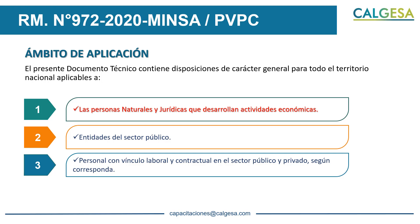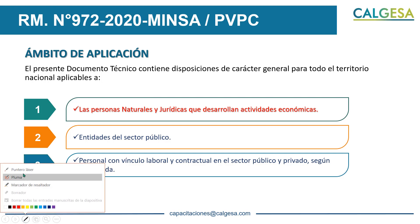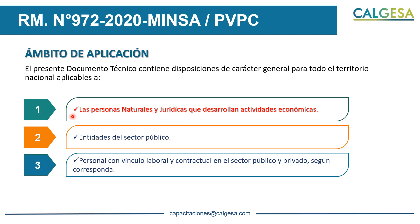Para el caso de la persona natural, un ejemplo: un contador que brinda un servicio de contabilidad a ciertos clientes o empresas y hace visitas a domicilio. Esta es una persona natural que desarrolla una actividad económica y como tal debería tener su plan de vigilancia. Si este contador o abogado tiene una oficina y el cliente va a ir a visitarle, también debería tener su plan de vigilancia implementado y registrado en el PSICOVID.